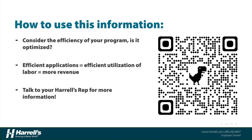I encourage you to reach out to your Harrells rep — the QR code on screen takes you to a rep locator tool. Through that conversation, consider whether your program's efficiency is optimized: can you apply a fertilizer plus a sparged ingredient to make two applications in one, use your labor more efficiently and effectively, and ultimately generate more revenue? We'll catch you next time on the next episode of 15-Minute Fridays.